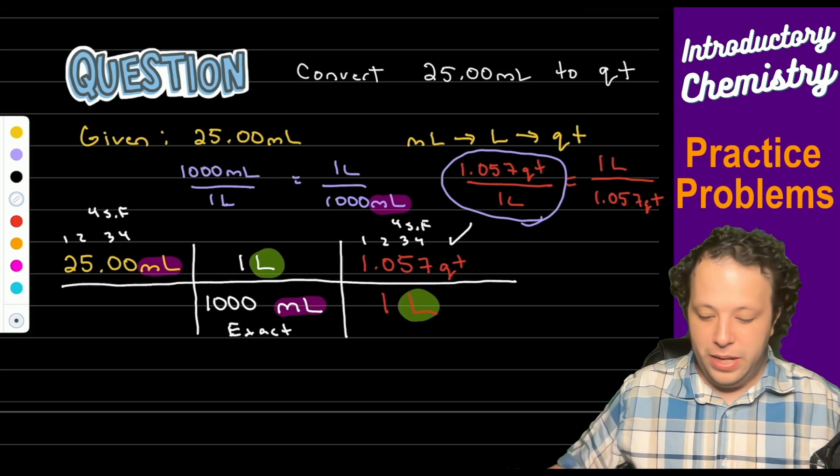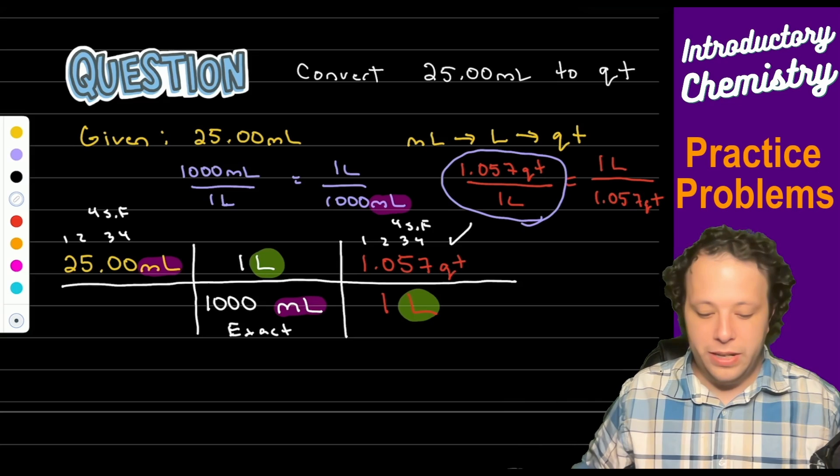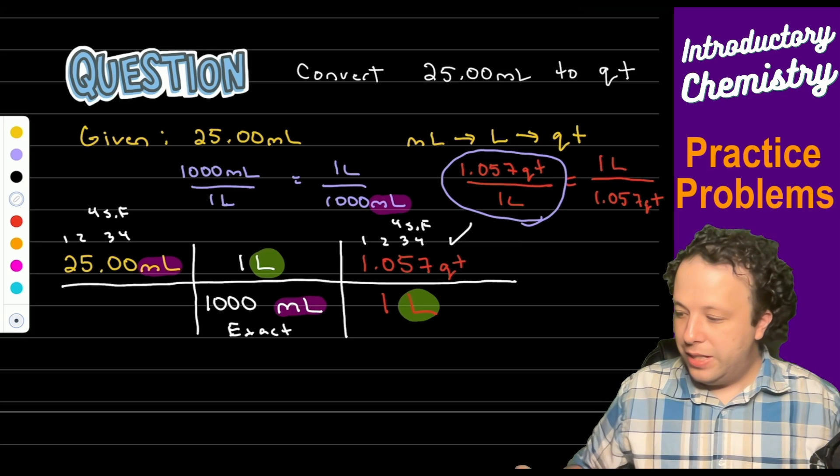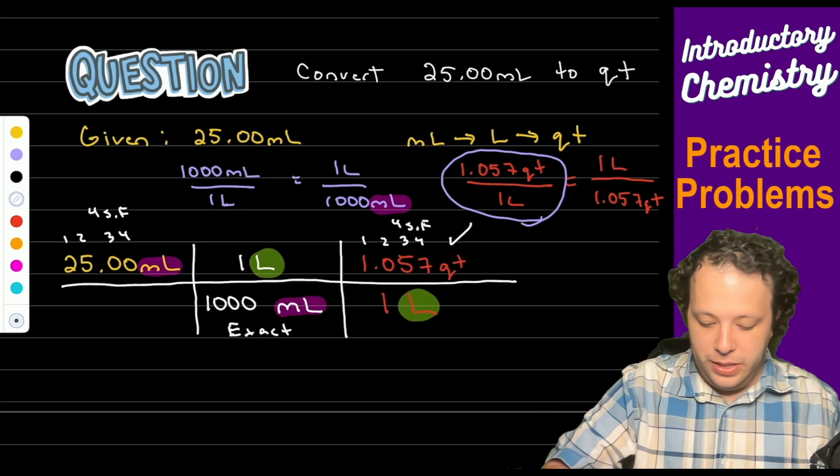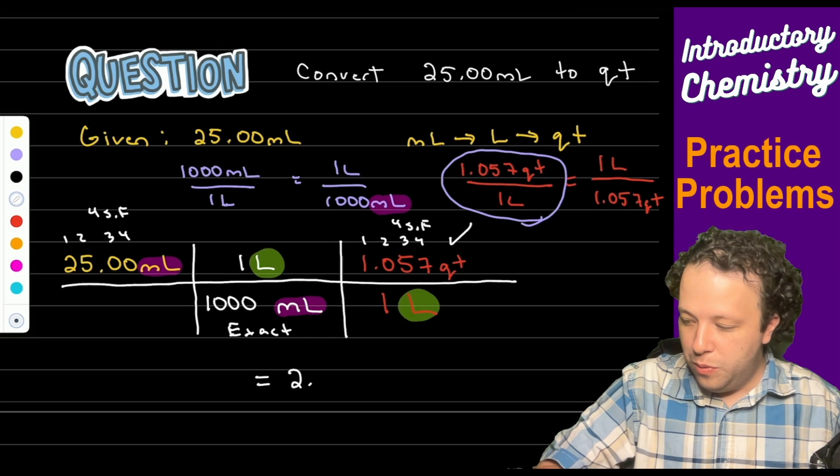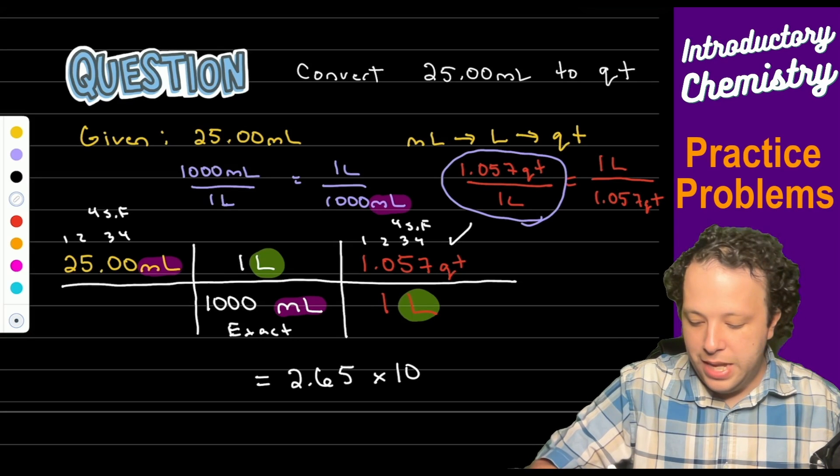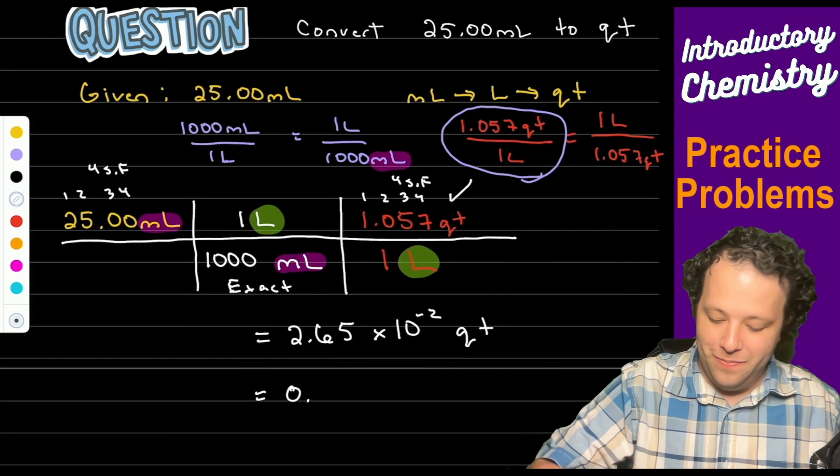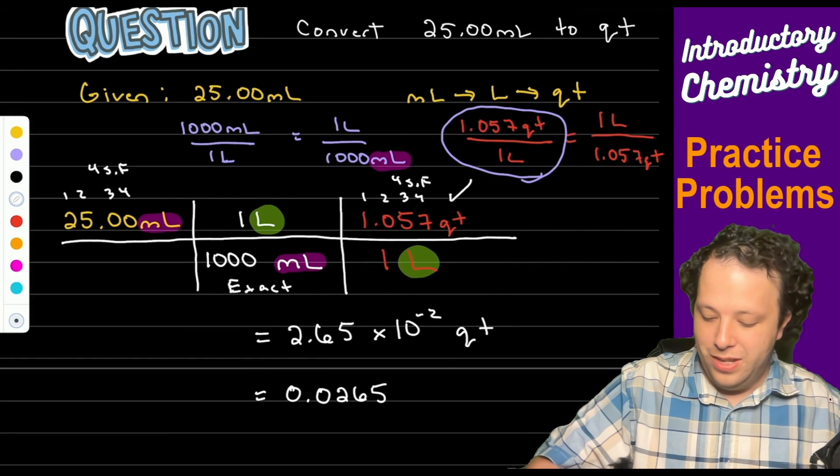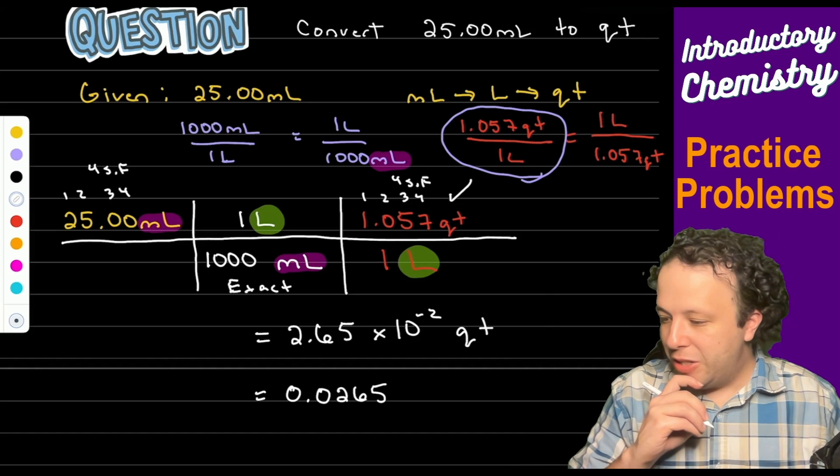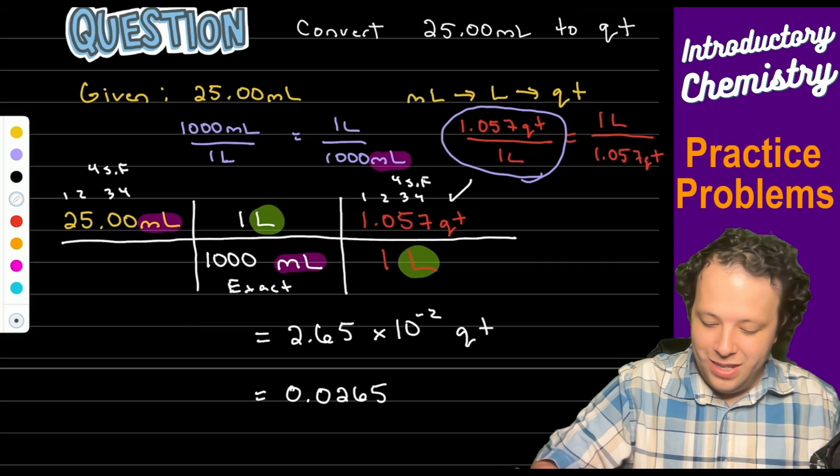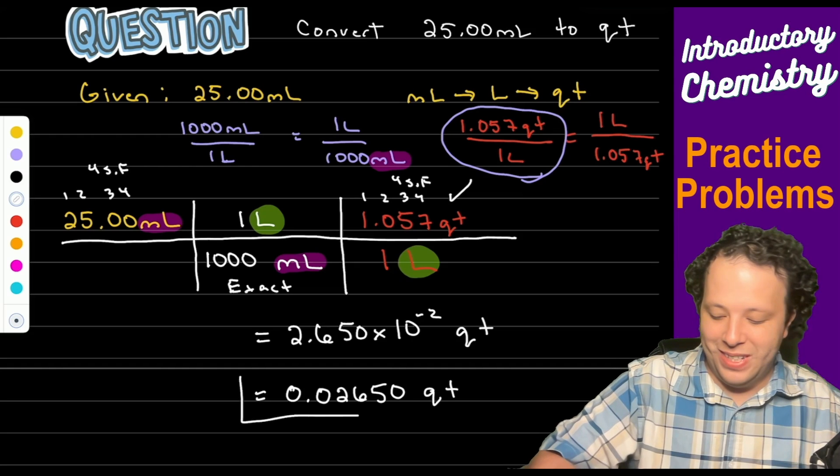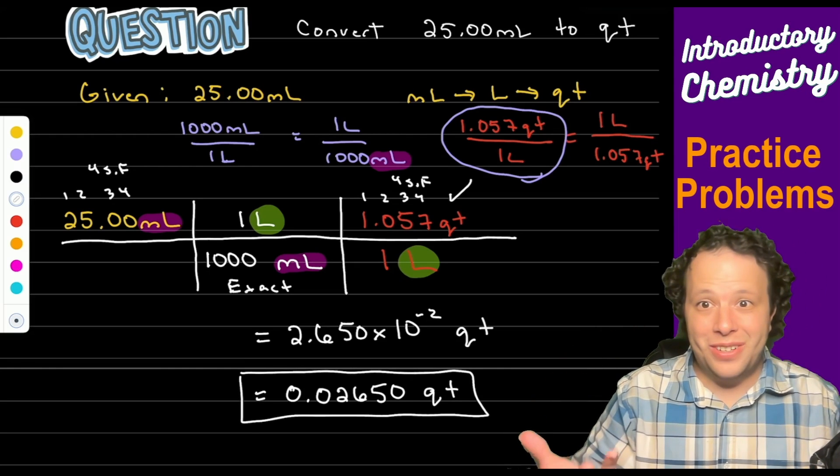So when we are doing that we have we are going to be doing the math here. So we have 25 times that 1.057 divided by 1000. So when you go through that what you are going to get is it's going to be equal to 2.65 times 10 to the negative 2 quarts, or you might have just have gotten on your calculator 0.0265 as your answer.